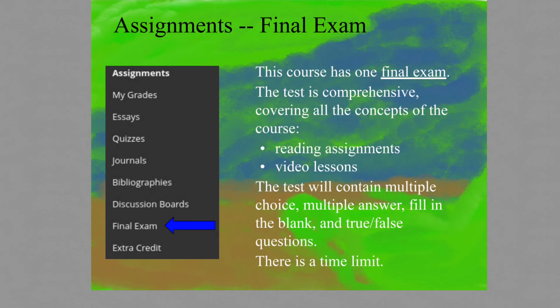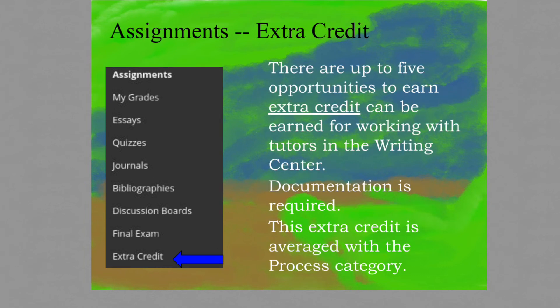The class has one final exam, which will be a comprehensive test covering the reading assignments and video lessons. The test contains multiple choice, multiple answer, fill in the blank, and true/false questions, and there will be a time limit for this exam. Students can earn extra credit in the process category up to five times by working with tutors in the writing center.